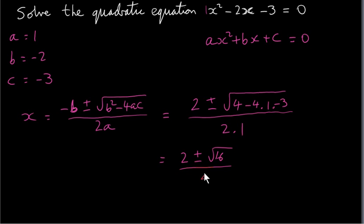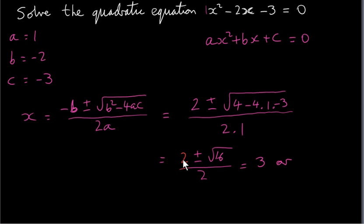We divide by 2 times 1, which is 2. So we get 2 plus or minus the square root of 16, giving us 2 solutions. If we take the plus sign, we get 2 plus 4 over 2, which is 3. If we take the minus sign, we get 2 minus 4, which is minus 2, divided by 2, giving minus 1. So those are our two solutions.